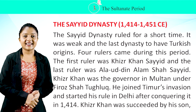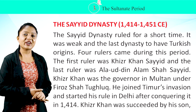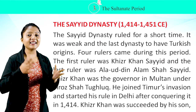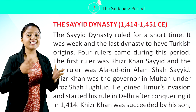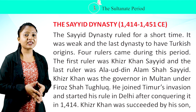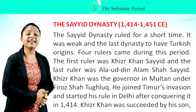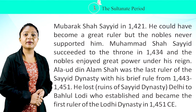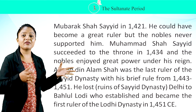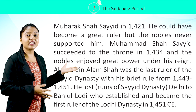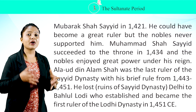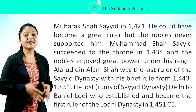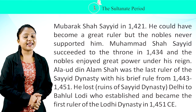The Sayyad Dynasty, 1414–1451 CE. The Sayyad Dynasty ruled for a short time. It was weak and the last dynasty of Turkish origins. Four rulers came during this period. The first ruler was Khizr Khan Sayyad and the last was Alauddin Alam Shah Sayyad. Khizr Khan was the governor in Multan under Firoz Shah Tughlaq. He joined Timur's invasion and started his rule in Delhi in 1414. He was succeeded by his son Mubarak Shah Sayyad in 1421. Muhammad Shah Sayyad succeeded to the throne in 1434, during whose reign nobles enjoyed great power. Alauddin Alam Shah, with a brief rule from 1443 to 1451, lost Delhi to Behlul Lodi, who became the first ruler of the Lodi Dynasty in 1451 CE.